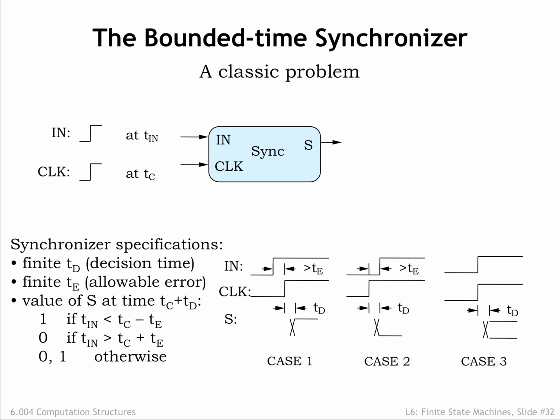Finally, if the two transitions are closer together than some specified interval te, the synchronizer can output either a 0 or a 1 within time td of clock's transition. Either answer is fine, so long as it's a stable digital 0 or digital 1 by the specified deadline.